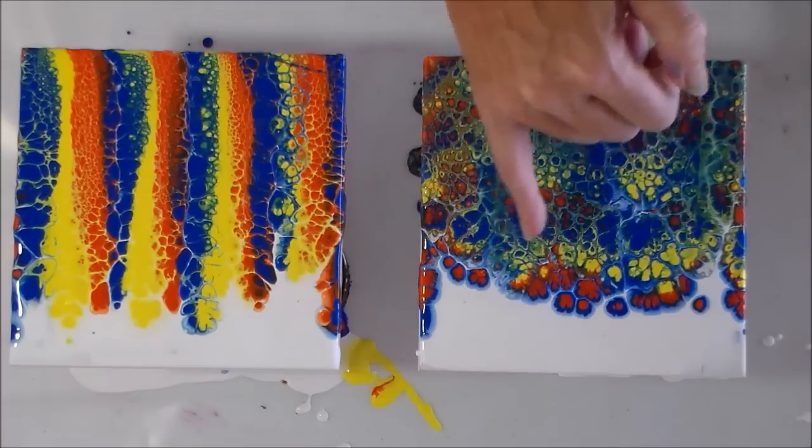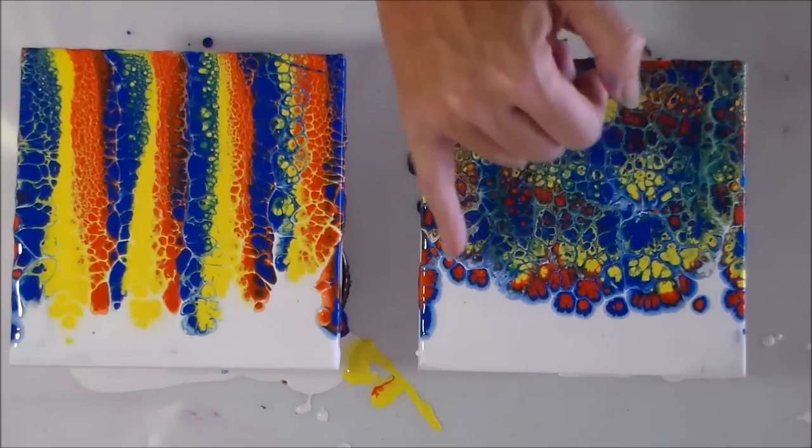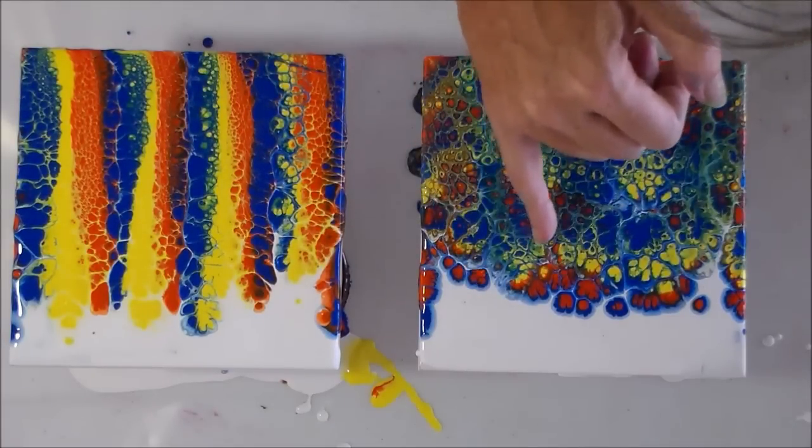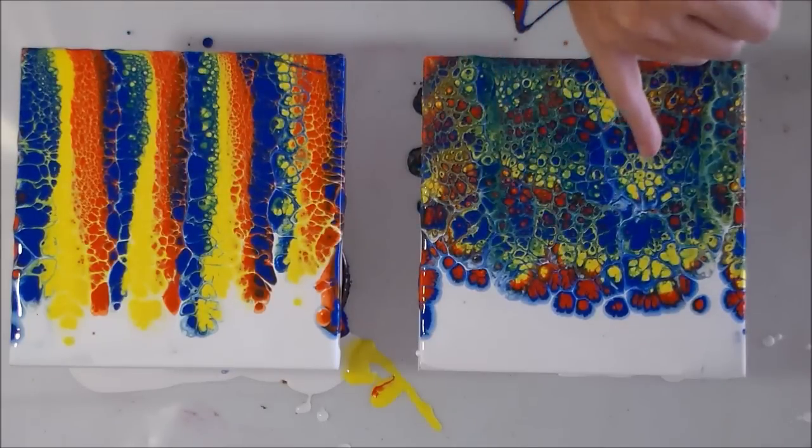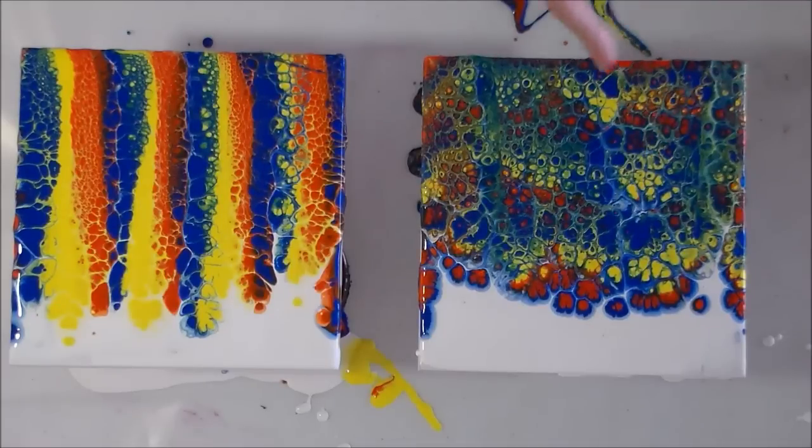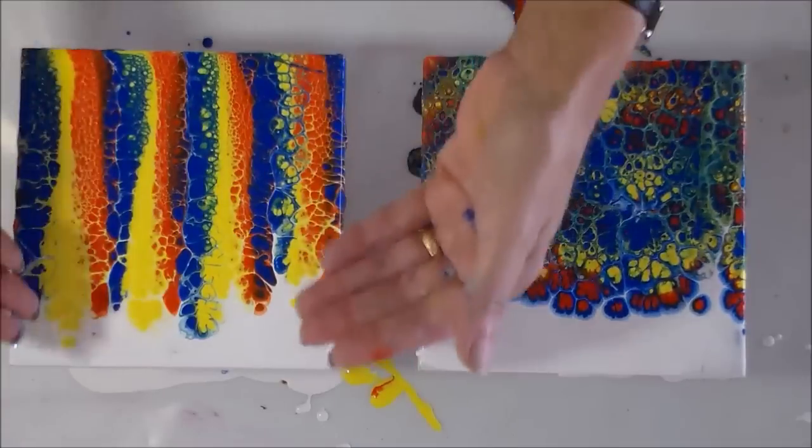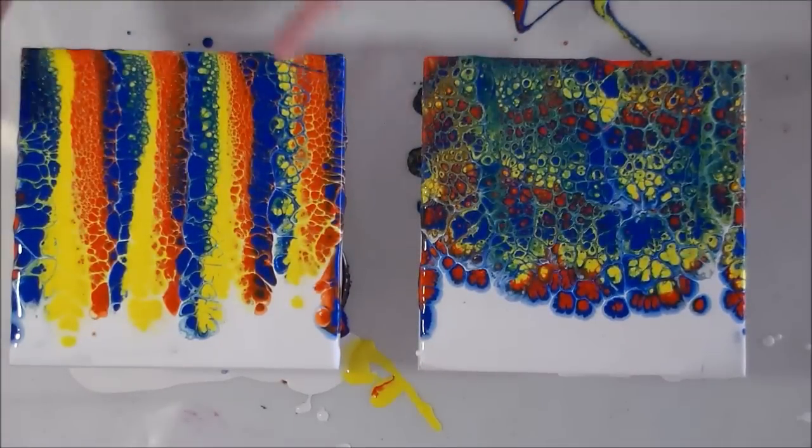So here where I had the blue and the orange, I've got orange cells with a blue outline. Here I've got the blue and the yellow mixed much more together. Here I've got blue with orange. Here I've got blue with a yellow around the outside and so it carries on. Here I've got some really nice ones at the bottom there.